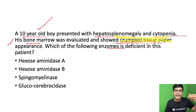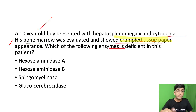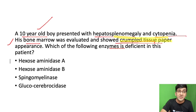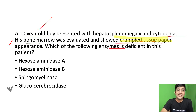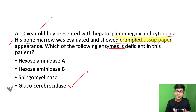Clinically I think of a storage disorder — it could be any storage disorder: Niemann-Pick, Gaucher, many things. When I have a bone marrow aspirate with crumpled tissue paper appearance, I pinpoint to Gaucher's disease. The question is not asking about Gaucher's directly by name — it asks about the enzyme defect. In Gaucher's, we know it's glucocerebrosidase deficiency. It's a perfect and easy question.